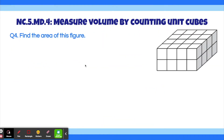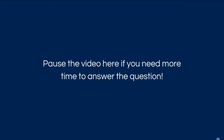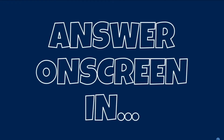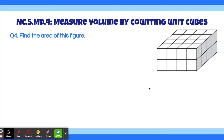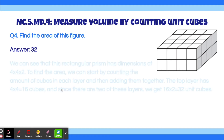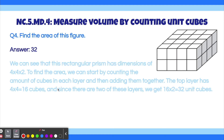Question 5. Find the area of this figure. The answer to this question is 32. We can see that this rectangular prism has dimensions of 4 times 4 times 2.